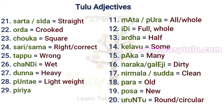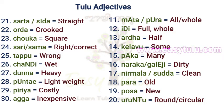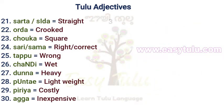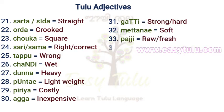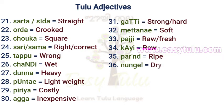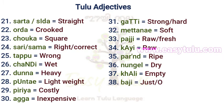Poontay — Lightweight. Piriya — Costly. Agga — Inexpensive. Gutty — Strong or Hard. Methan — Soft. Pajji — Raw or Fresh. Kai — Raw. Paranthu — Ripe. Nungil — Dry. Kali — Empty. Baji — Just or Only. Kattal — Dark.